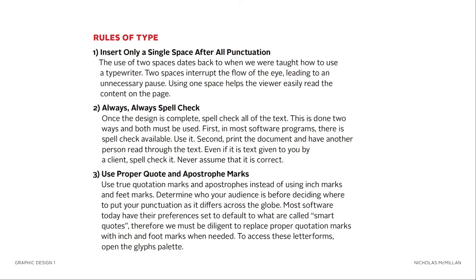Let's go over the rules of type. Number one: insert only a single space after all punctuation. The use of two spaces dates back to when we were taught how to use a typewriter. Two spaces interrupt the flow of the eye, leading to an unnecessary pause. Using one space helps the viewer easily read the content on the page.